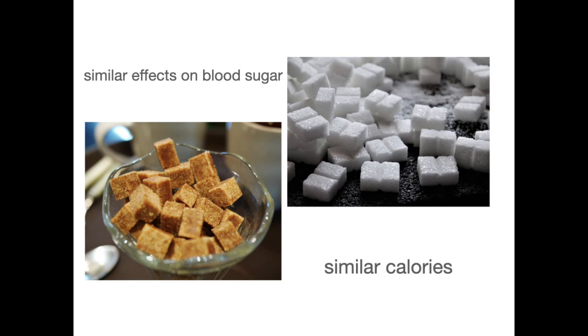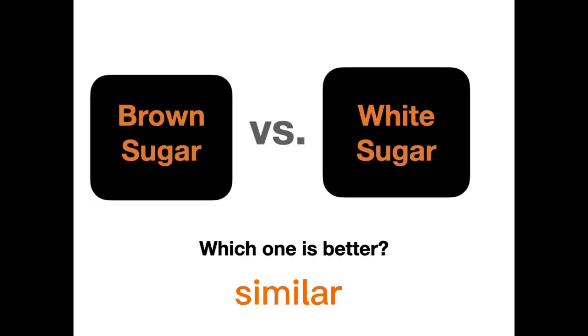When it comes to nutrition, there's not much difference between white and brown sugar — both contain roughly the same amount of calories and have a similar effect on blood sugar levels. Some people believe brown sugar may be slightly healthier because it contains small amounts of minerals such as calcium, potassium, and iron from molasses, but these amounts are not significant enough to have a major health impact. It's important to limit added sugars of all kinds and choose natural sources of sweetness such as fruit whenever possible. That's today's episode — thank you for watching!